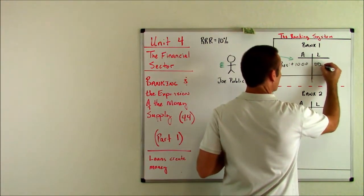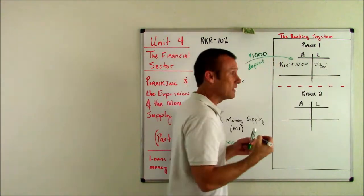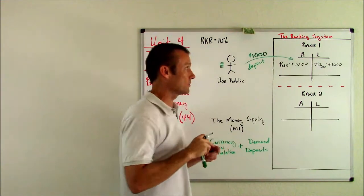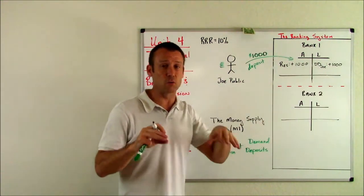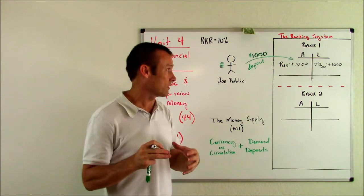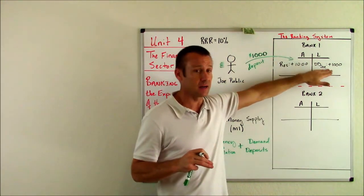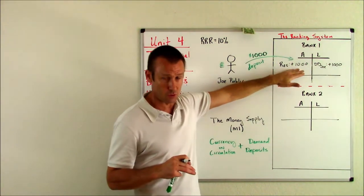So demand deposit, Joe, this is his checking account. It's going to get credited $1,000. So there's a little double entry accounting, which is necessary when we record transactions. Bank one is getting the reserves. However, they have to take on a liability to get those reserves.